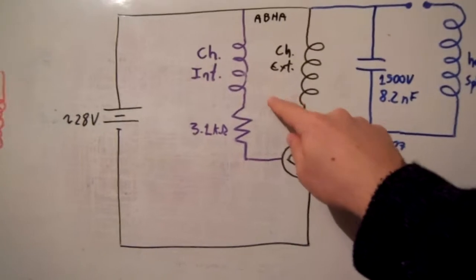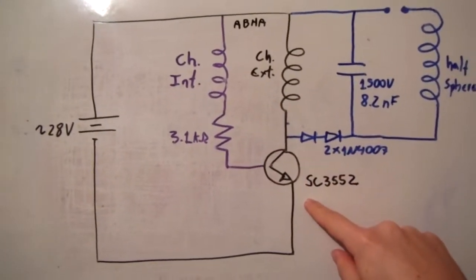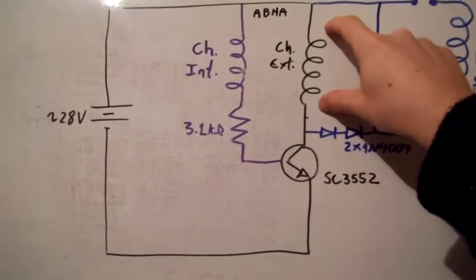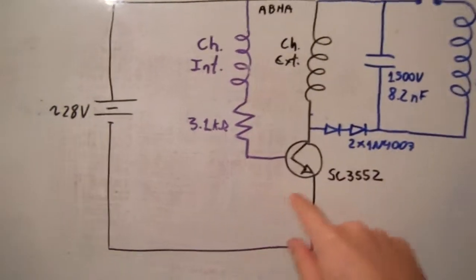As you can see here the Abra coil is part of this Slayer-excited circuit and one important thing is that the external channel is connected to the collector and the internal channel is connected to the base.